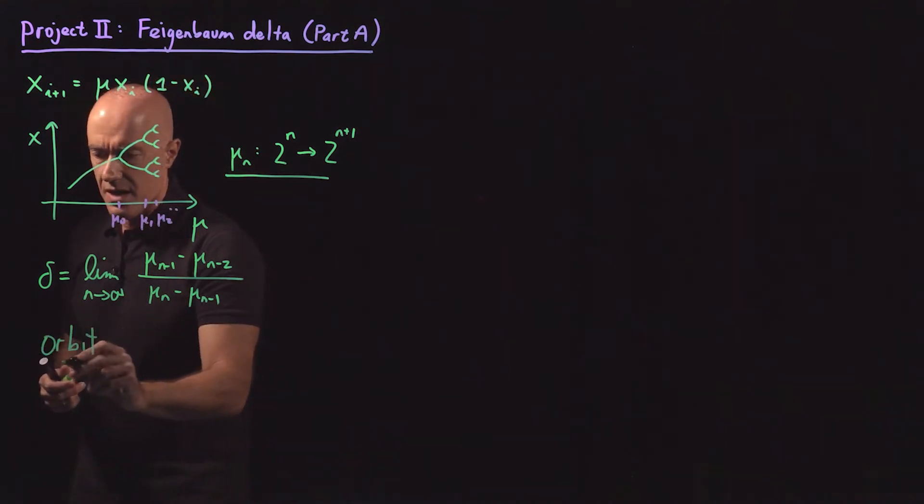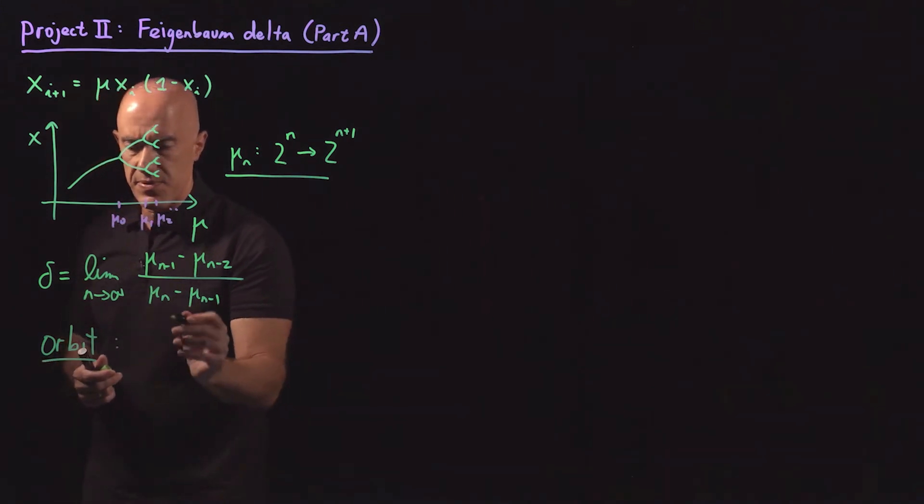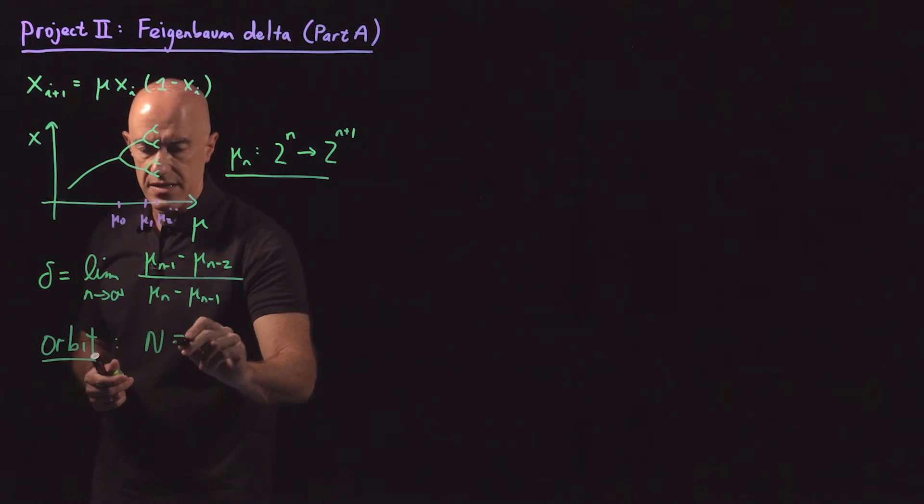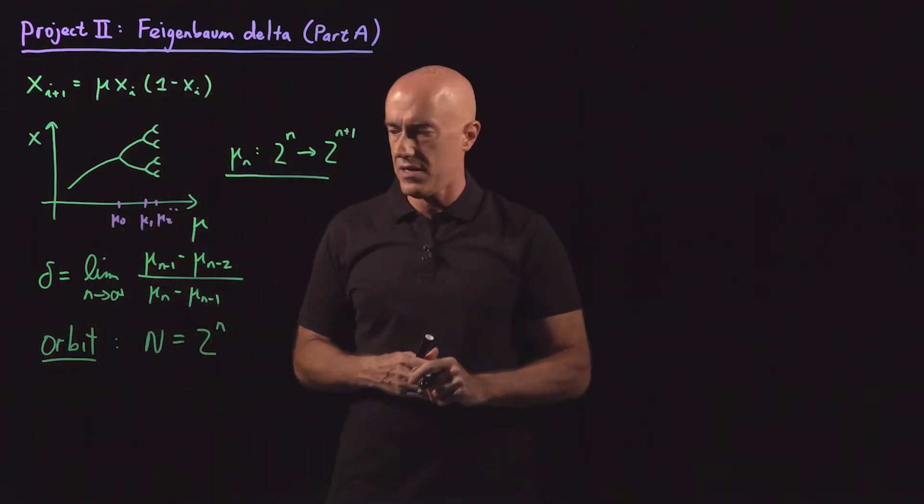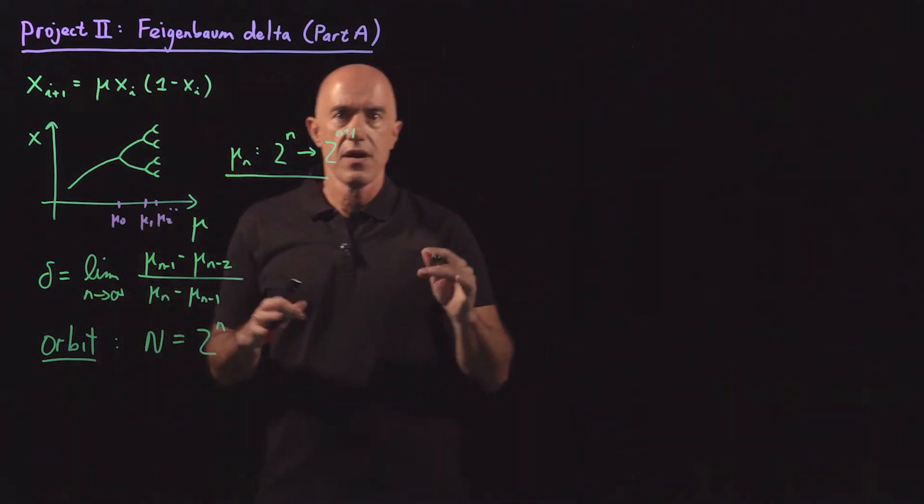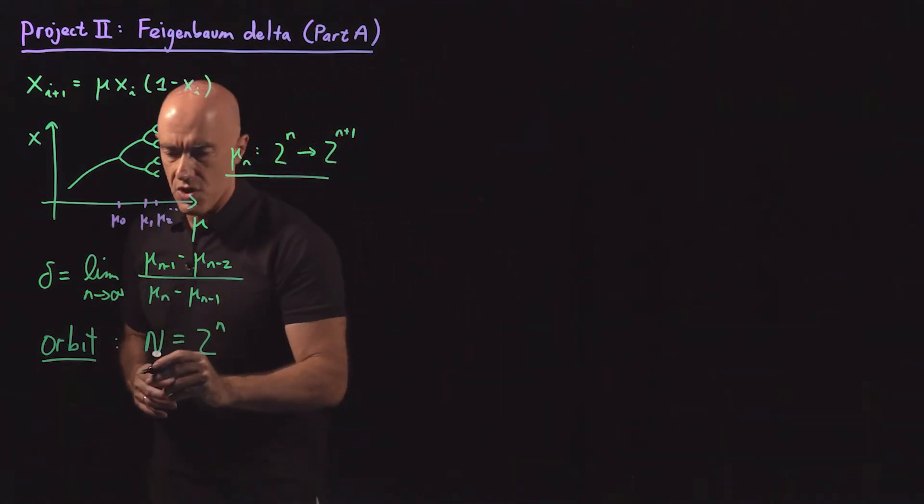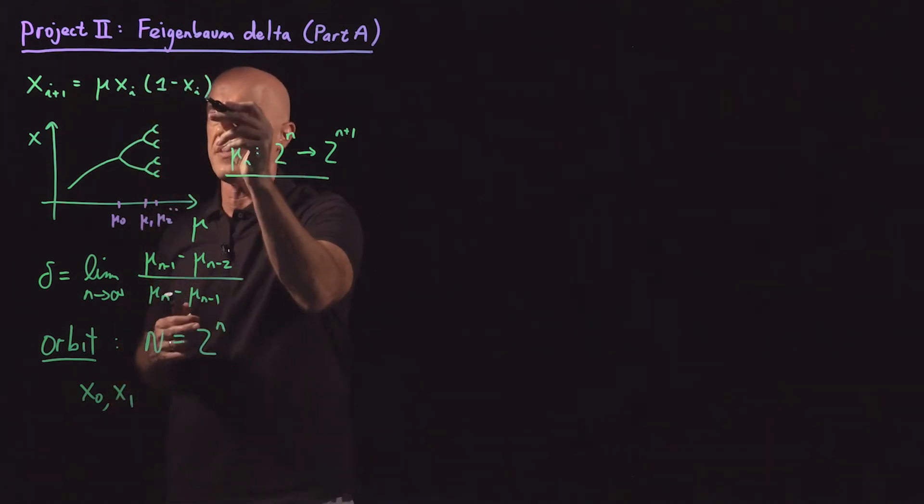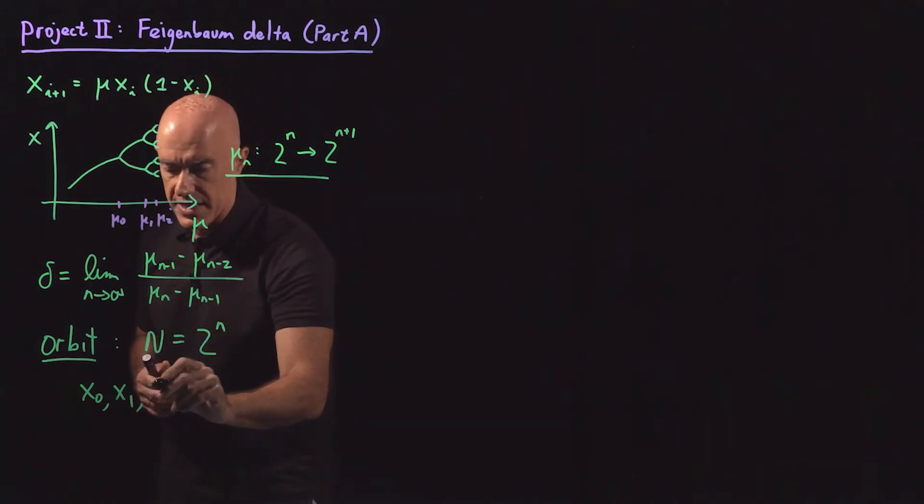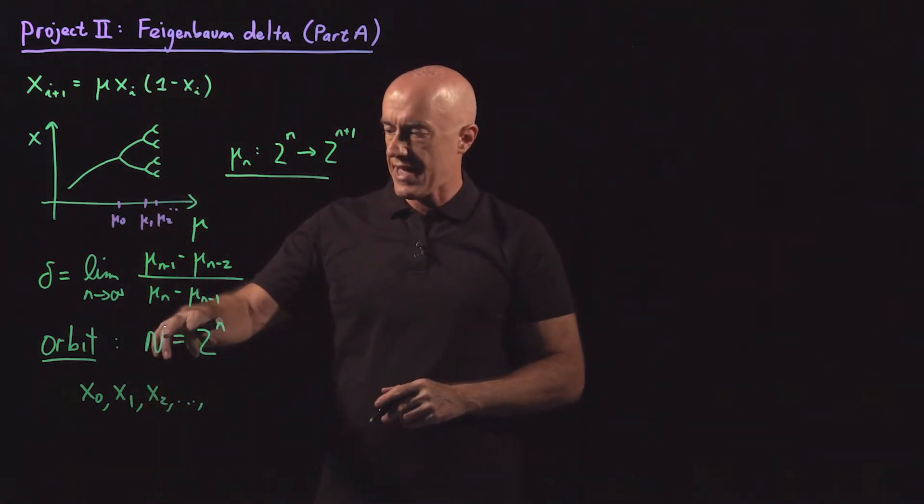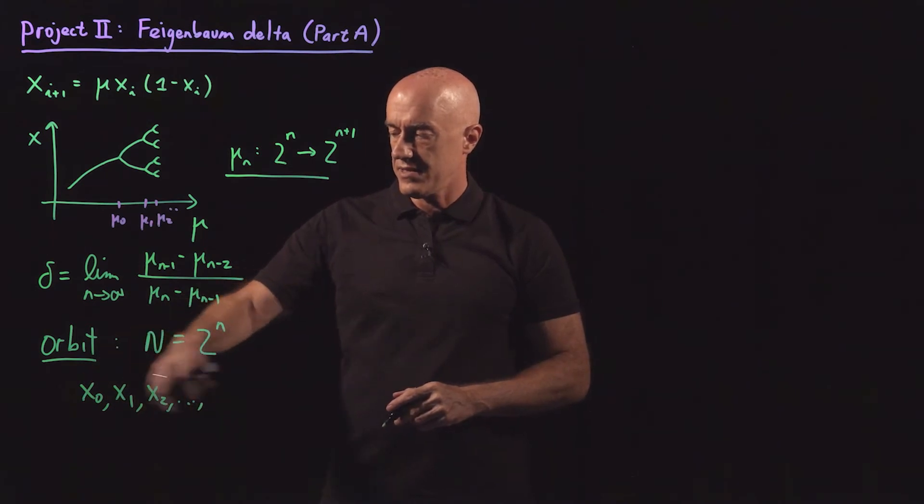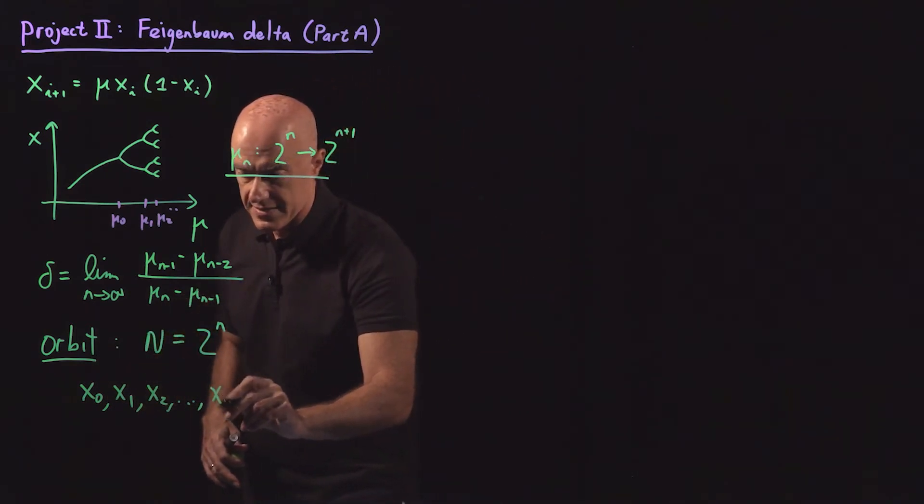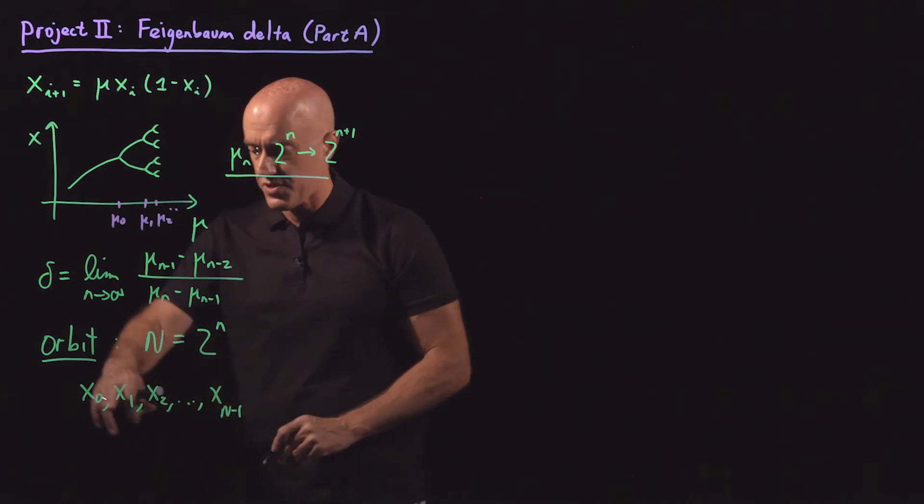First I should define what is an orbit of the map. The period, we're going to define capital N as 2^n, so I don't have to keep writing 2^n. Then an orbit are these iterates. So an orbit will be x0 after the transient. x0 will give us x1. So when we plug in x0 on the right-hand side, we get x1. We plug in x1, we get x2, and so on. So we're at period capital N, so we have exactly N distinct values here. So we have an x sub capital N minus 1 because we start at 0.